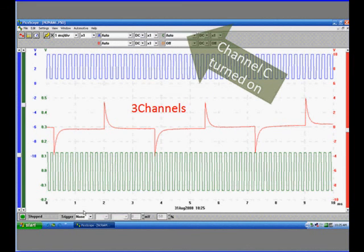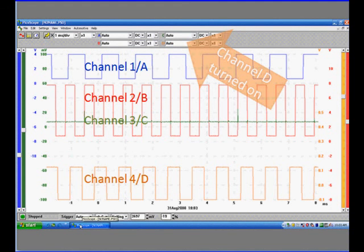Now we've turned on channel C. In this case, it's green. The green channel is the second scale on the left. There is a blue and a green on the left. There's a red on the right. Now channel D is on. Channel D is the orange channel. At the bottom, the scale for that is on the right.